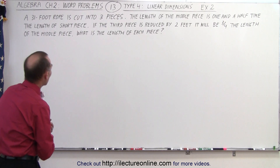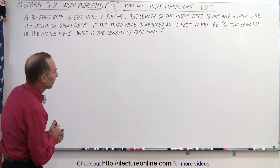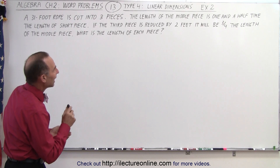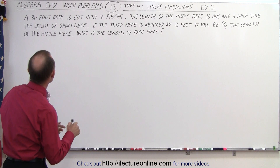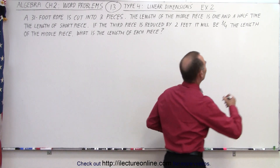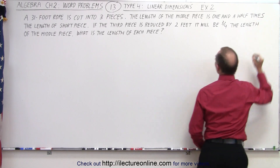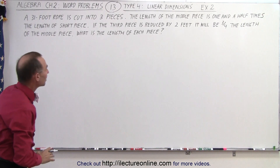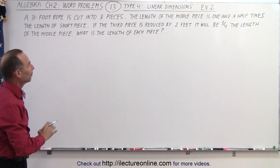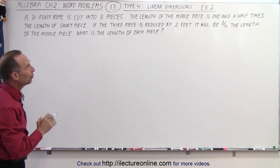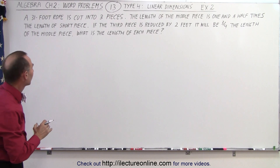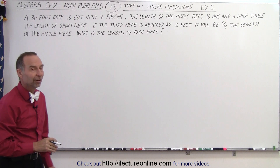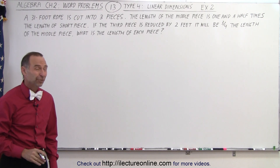A 31-foot rope is cut into three pieces. The length of the middle piece is one and a half times the length of the short piece. If the third piece is reduced by two feet, it will be three quarters the length of the middle piece. What is the length of each of the three pieces?